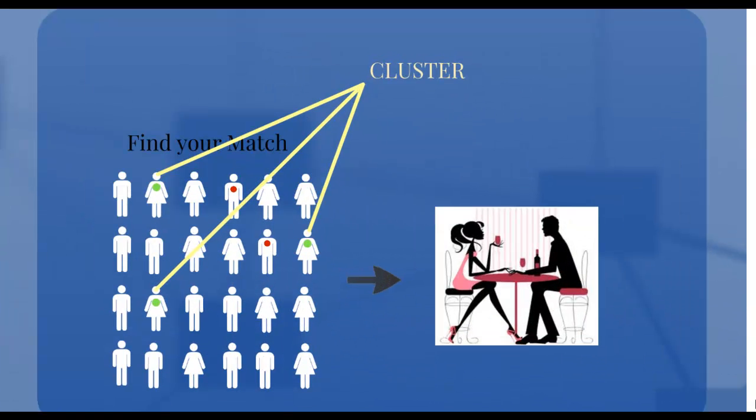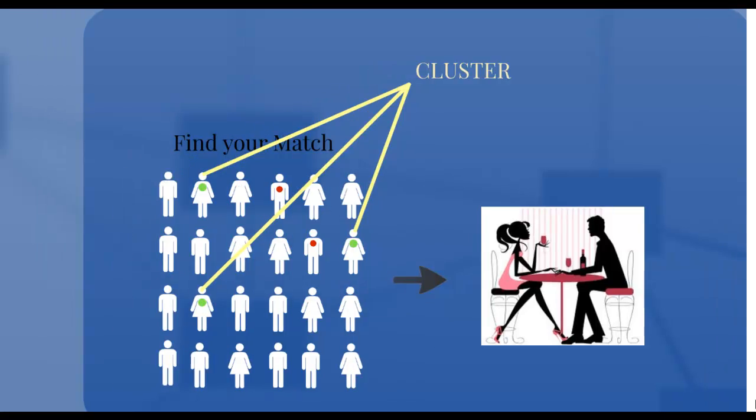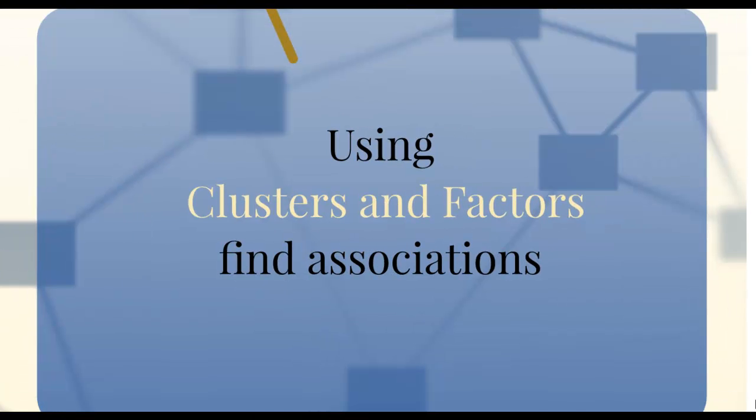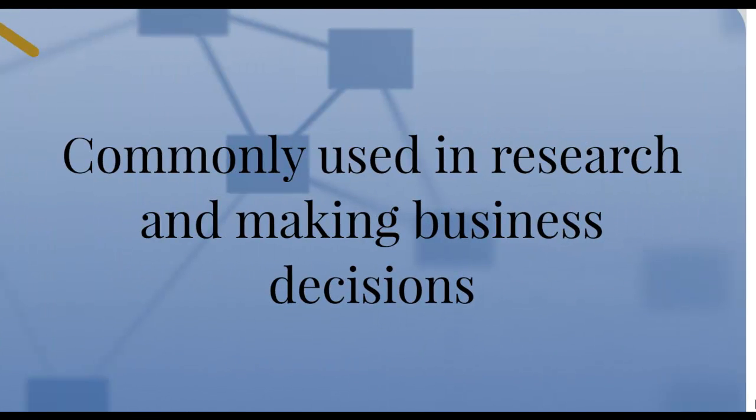Partner preferences form clusters. The individual characteristics form factors. Using clusters and factors find association. It's commonly used in research and making decisions.